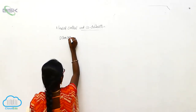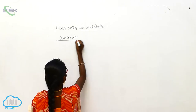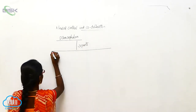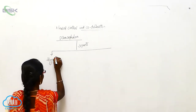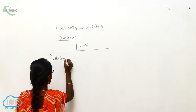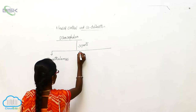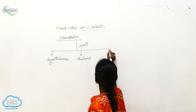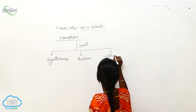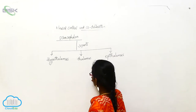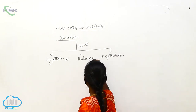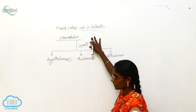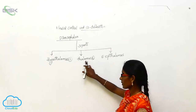The diencephalon divides into three parts: the epithalamus, thalamus, and hypothalamus.